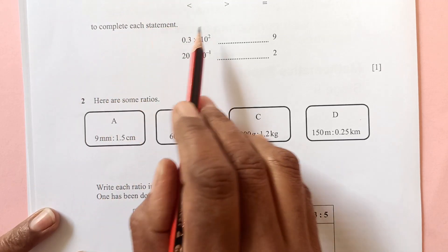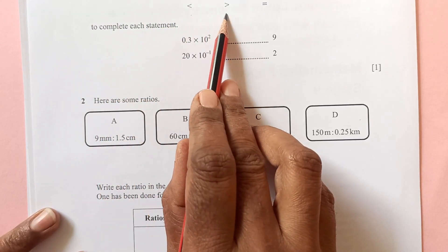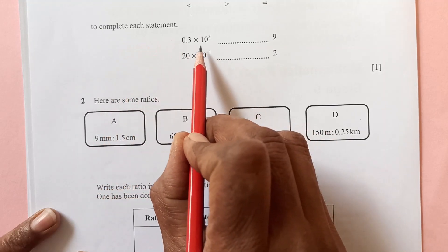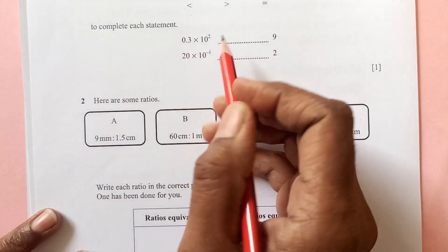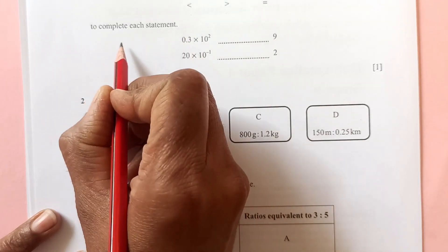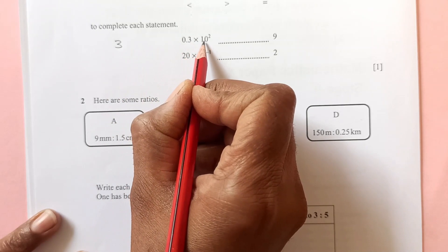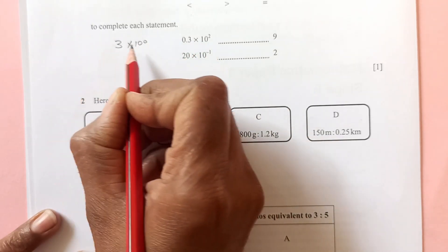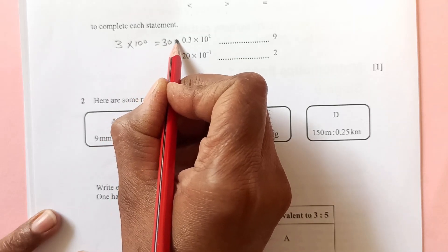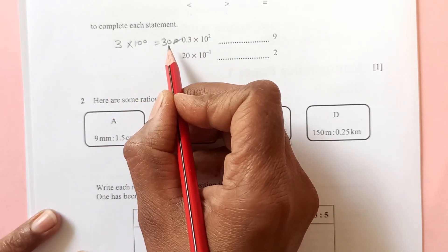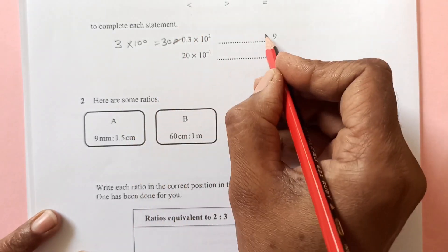First question we have here: write one of these signs, less than, greater than, or equal to complete each statement. This is 0.3 times 10 squared. 10 squared means 100, so 3 times 100 is 300. There is one decimal place, so this is 30.